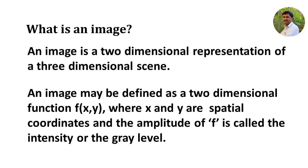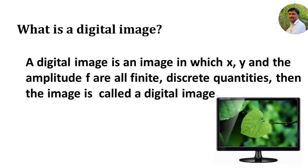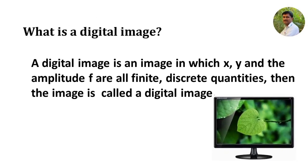Having known what an image is, now let us look at the term digital image. If the spatial coordinates x and y and the amplitude f are all finite and discrete, then such an image is known as a digital image. Obviously, the images stored in the memory of a computer are digital images, because a computer memory can hold only finite and discrete quantities.